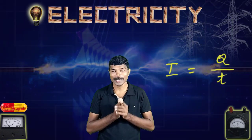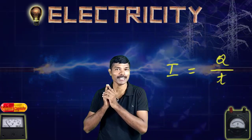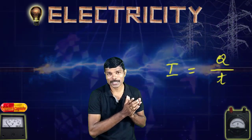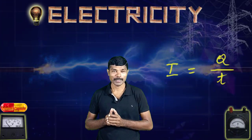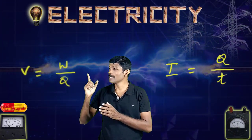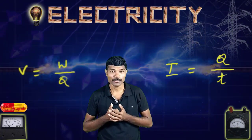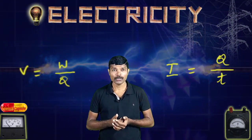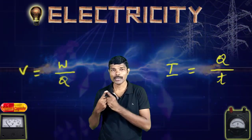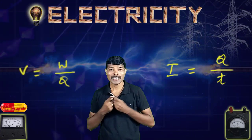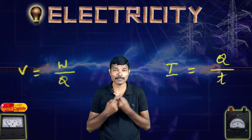When we talk about potential difference, it is the amount of work done in carrying a unit charge from one point to another point across two points of a current-carrying conductor. Mathematically, potential difference V = w/q, where w is the work done and q is the amount of charge. So, is there any relationship between these two quantities — current and potential difference?